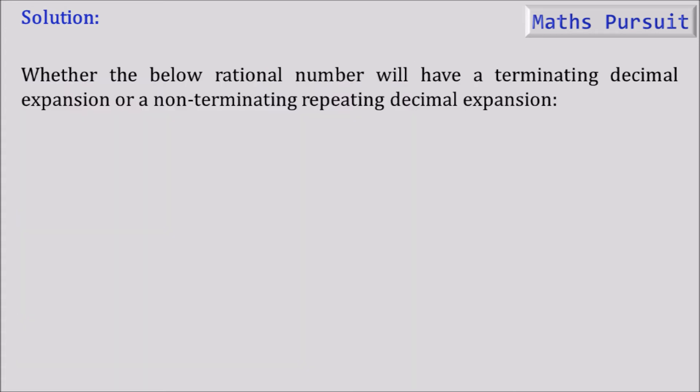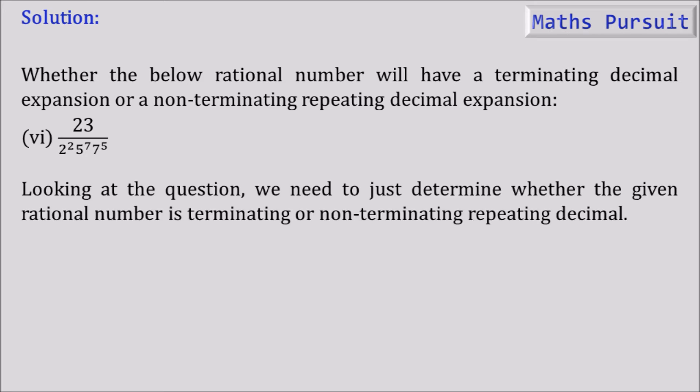The question asks whether the rational number will have a terminating decimal expansion or a non-terminating repeating decimal expansion. The given number is 23 by 2 to the power 2, 5 to the power 7, and 7 to the power 5. We just need to determine this without doing any calculations.